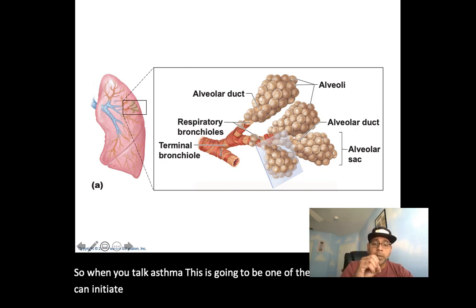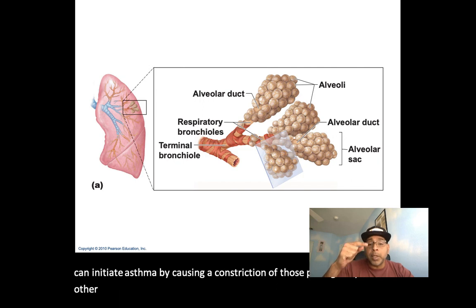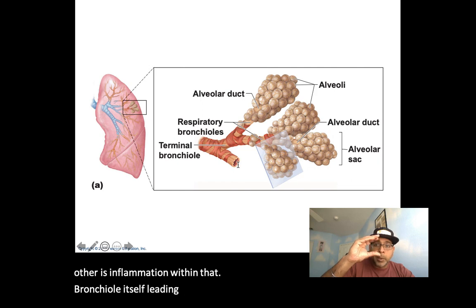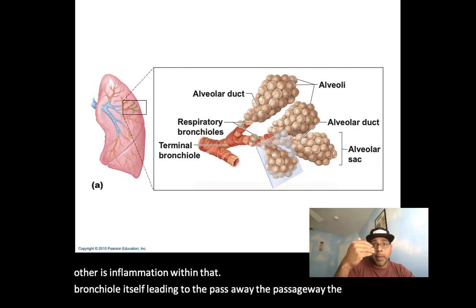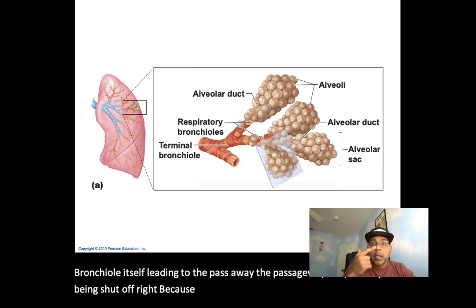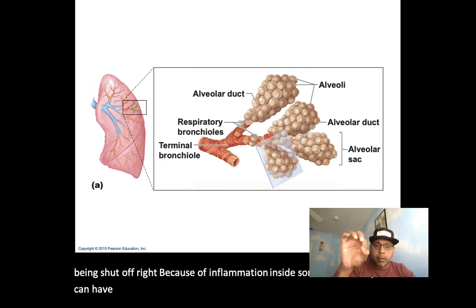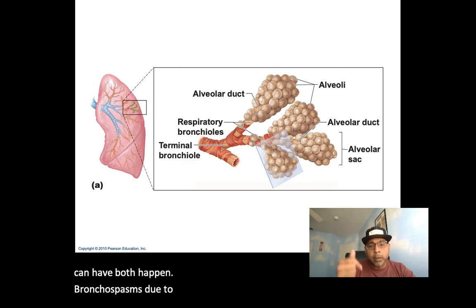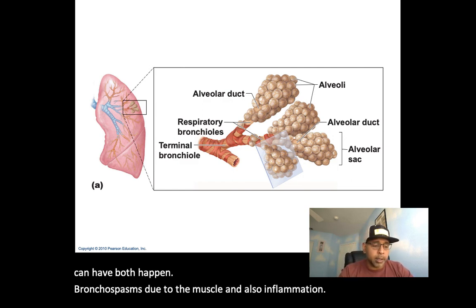Smooth muscle is present along the terminal bronchioles and respiratory bronchioles. In asthma, constriction of those passageways is one mechanism — bronchospasm due to muscle contraction — and the other is inflammation within the bronchiole itself. Sometimes both happen together, requiring both types of medication.